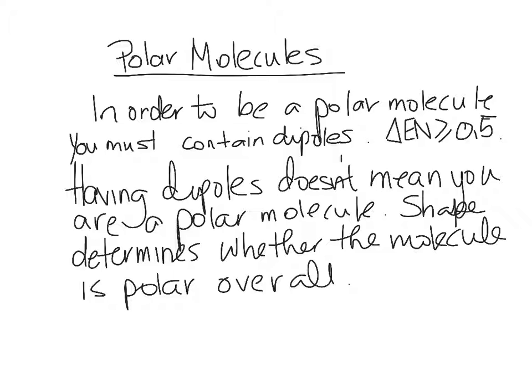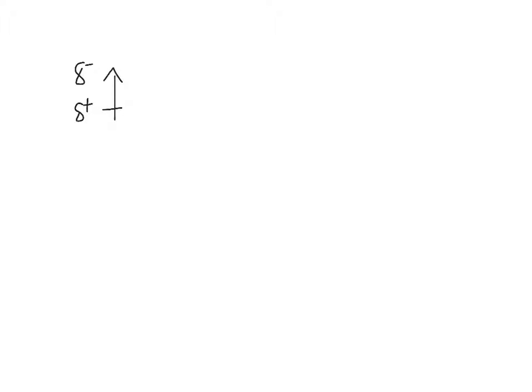We're going to treat dipoles like vectors. When you have a vector, you have a tail and you have a head. When you add vectors, you add them head to tail. You take your first vector. When you add your second vector, you add the tail of the second one to the head of the first one.